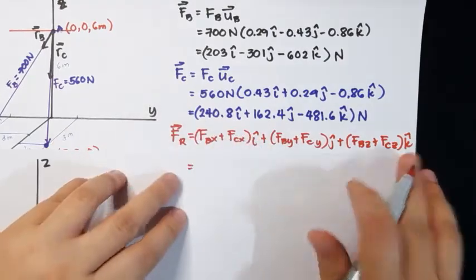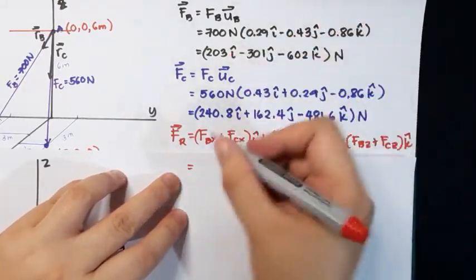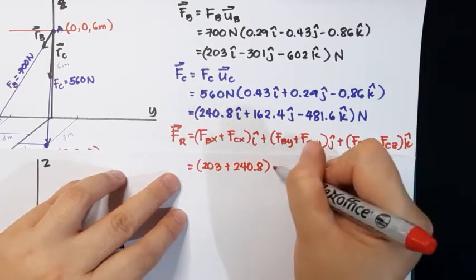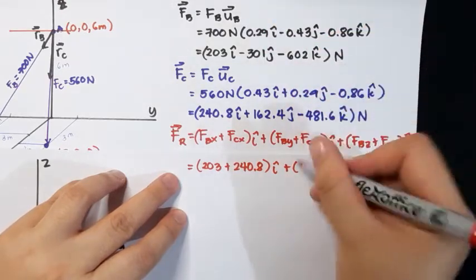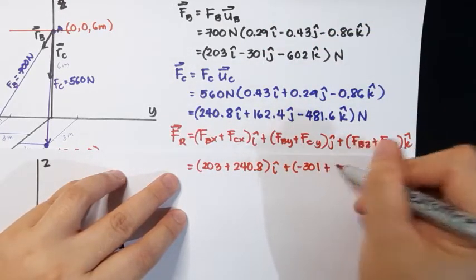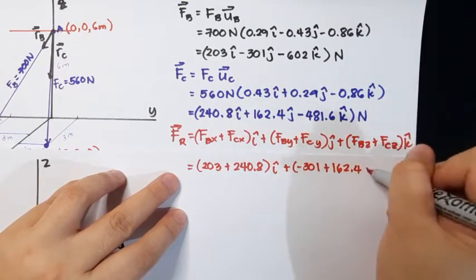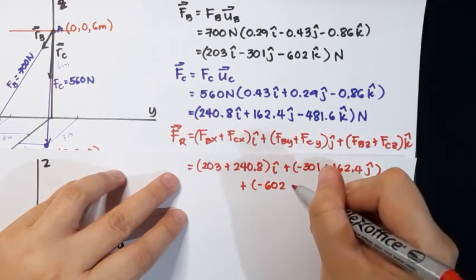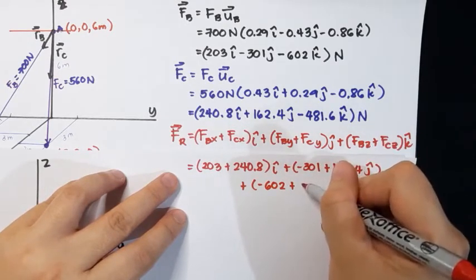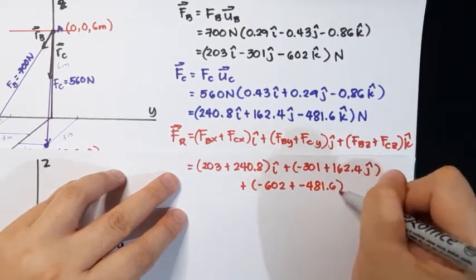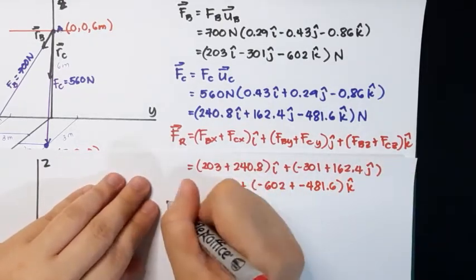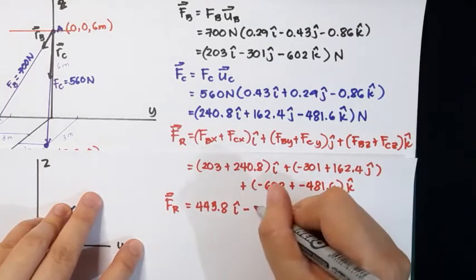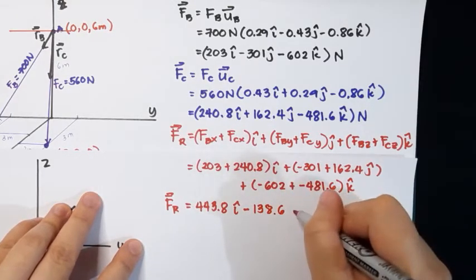Now let's find the resultant force vector FR by adding the components. FR = (203 + 240.8)î + (−301 + 162.4)ĵ + (−602 + (−481.6))k̂ N. Simplifying, FR = 443.8î − 138.6ĵ − 1083.6k̂ N.